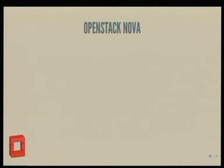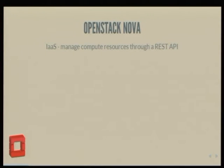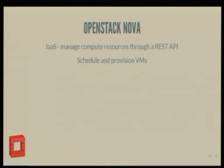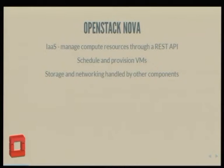More about OpenStack Nova itself, which is the compute part — it manages compute resources, basically VMs that consume CPU and memory on your compute infrastructure through a REST API. It allows you to schedule VMs across your pool of hardware. Storage and networking are handled by different components, and I won't be talking about them here.